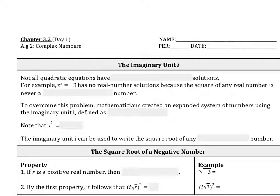3.2 Day One — we're looking at complex numbers and the imaginary unit I. Not all quadratic equations have real number solutions. For example, x squared equals negative 3 has no real number solutions, because the square of any real number is never a negative number. There's nothing you could square that would give you a negative value — it would always be positive.